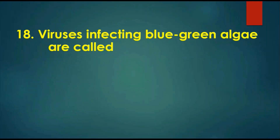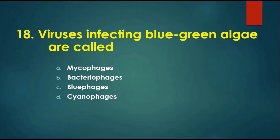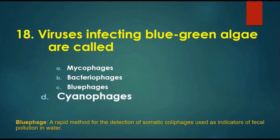Question 18: Viruses infecting blue-green algae are called — options are: A) myco-phages, B) bacterial phages, C) blue phages, D) cyanophages. Myco-phages are viruses affecting fungi. Bacterial phages attack bacteria. Cyanophages infect cyanobacteria, which belong to blue-green algae — that is the answer. Blue phages are a rapid detection method for somatic coliphages used as indicators of fecal pollution in water.